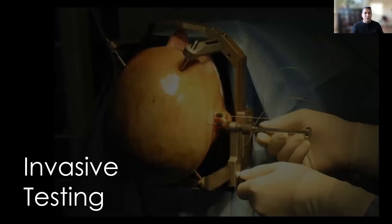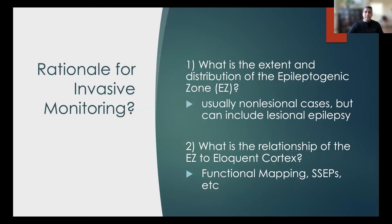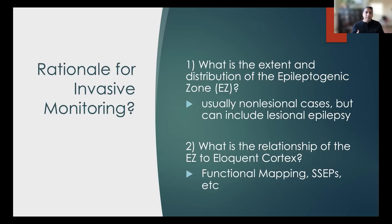To really get into how this works, we can start talking about invasive testing and monitoring. When we talk about implanting electrodes in the brain, not every patient gets that. What we do is get all the non-invasive testing — the MEG, PET study, and others — and look to see how much correlation there is. If everything points to the right temporal lobe, for instance, that gives you a very high likelihood that the seizures are coming from there, and you can often proceed directly to surgery to treat that area.